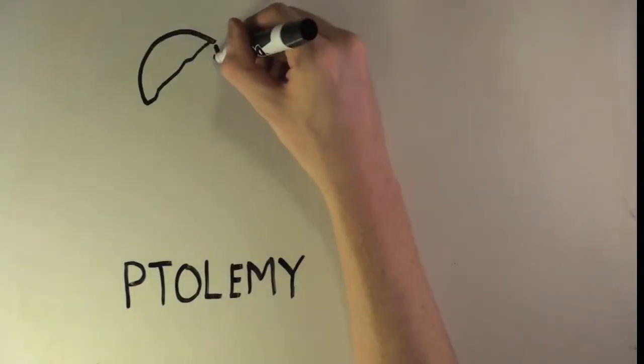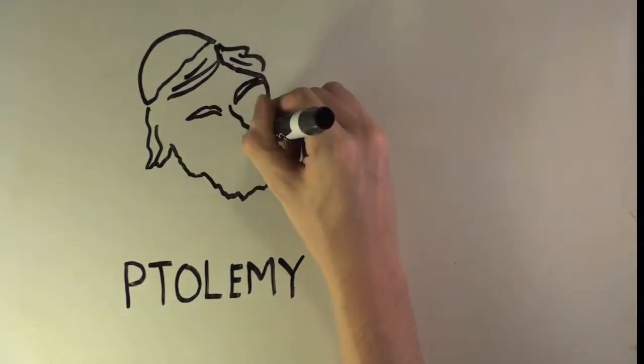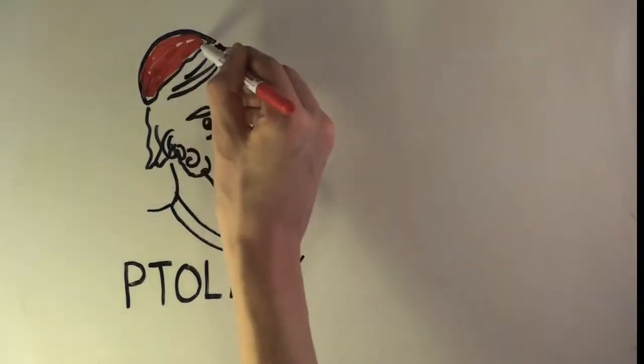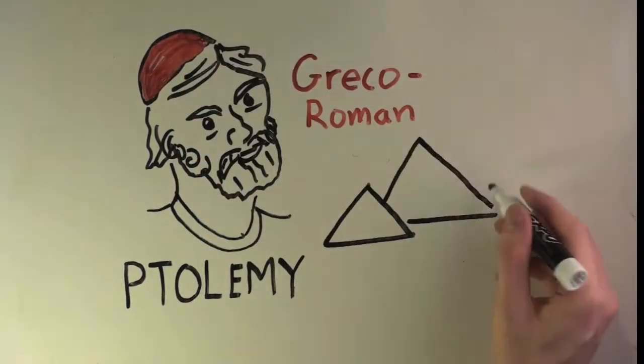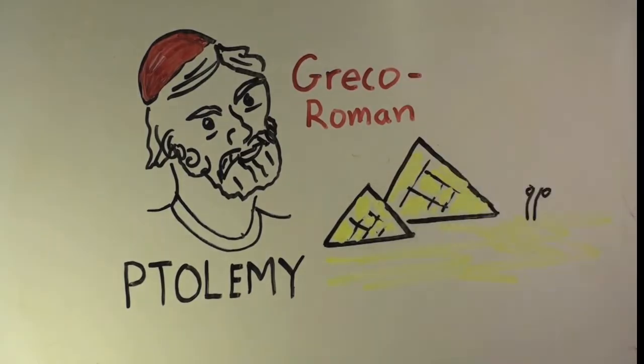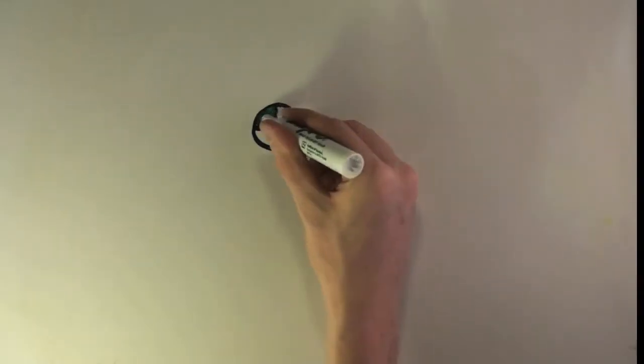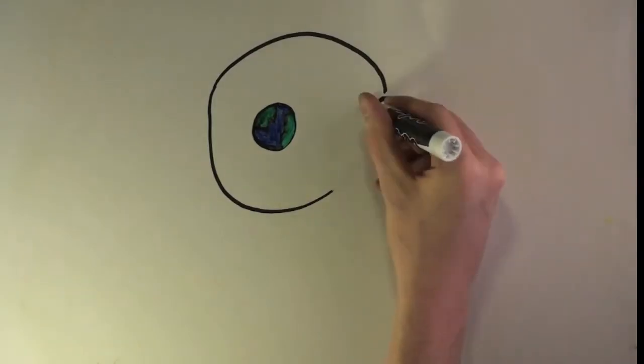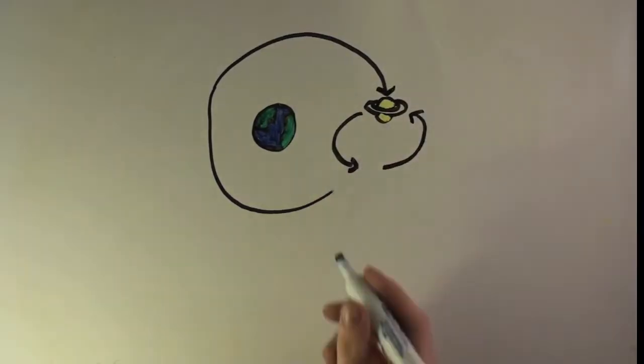Claudius Ptolemy, a Greco-Roman living in Egypt, came up with the theory of epicycles to account for retrograde motion. He theorized that in their orbits around the Earth, the planets move in many orbits or epicycles. This would account for the planets' backward motion.